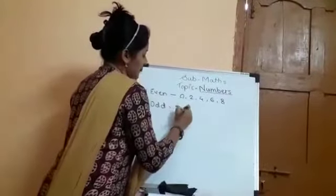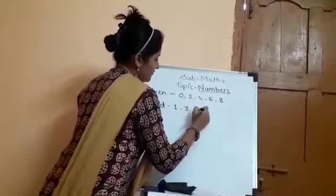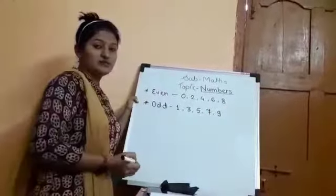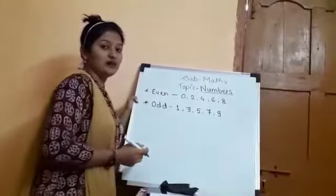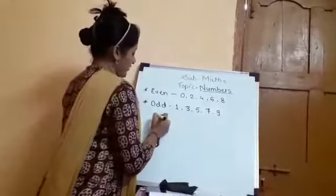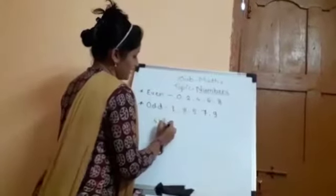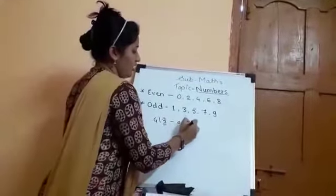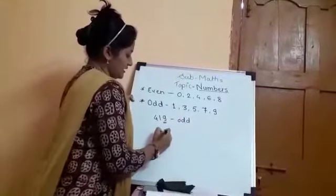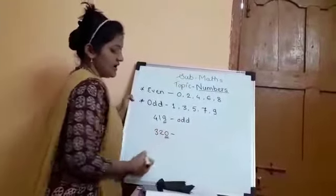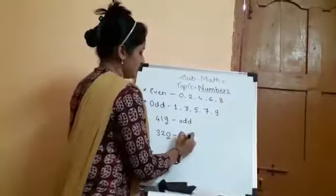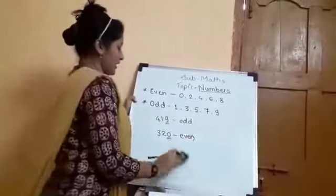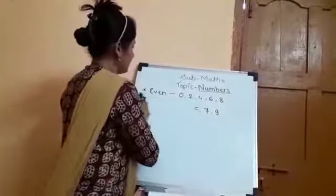The digits for odd numbers are 1, 3, 5, 7, and 9 at the 1's place — you can consider that number an odd number. For example, 490: 0 is at the 1's place so this number is even. Another example: 20, where 0 is at the 1's place, so this number is even. This way you can find whether a number is even or odd.